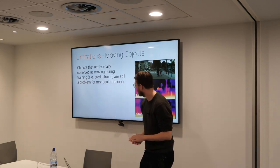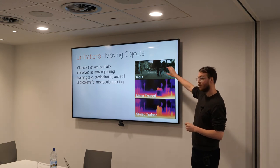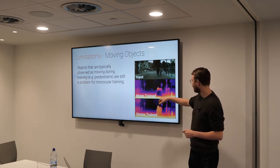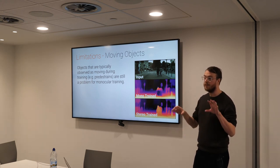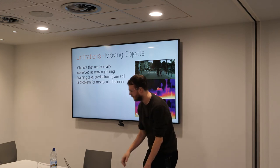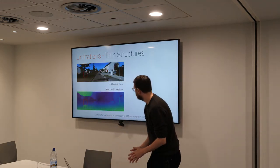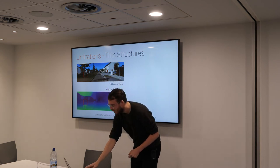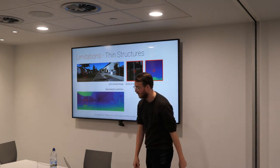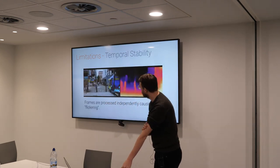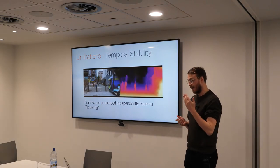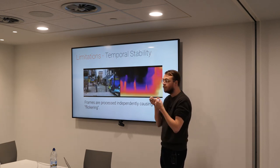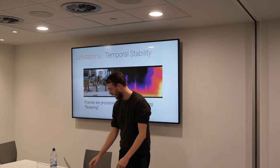Moving objects are a real issue too — objects like pedestrians that typically appear to be moving during training time result in holes or infinite depth predictions when training with only monocular video sequences. When we train with stereo we don't have this problem, because stereo treats everything as fundamentally static. Another big issue is detail or thin structures — these models just don't do a particularly good job at capturing subtle detail like trees. And there's temporal stability: we train models to do predictions independently per frame, so you observe flickering effects because there's no notion of temporal stability inherently built in.